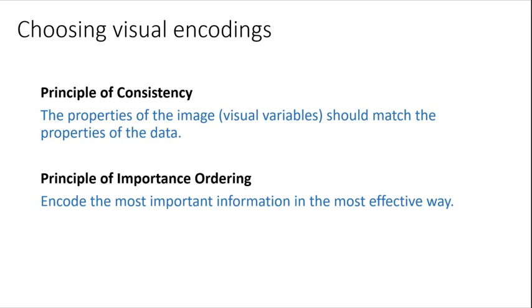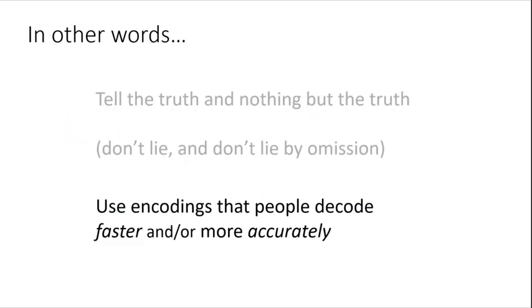The important thing is to encode your most important information, your message, in the most effective way possible. In other words, tell the truth and nothing but the truth. Don't use bar charts for categorical data. Don't lie, and don't lie by leaving things out. Use encodings that people decode faster and more accurately, and we're going to talk about that in the next set of slides.